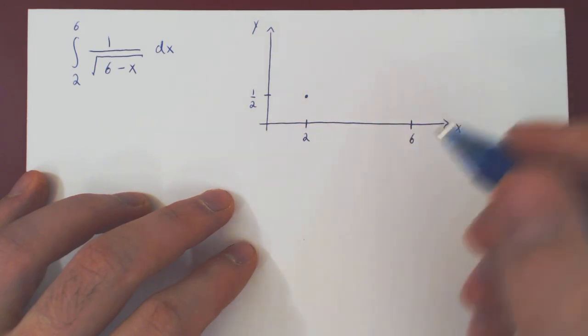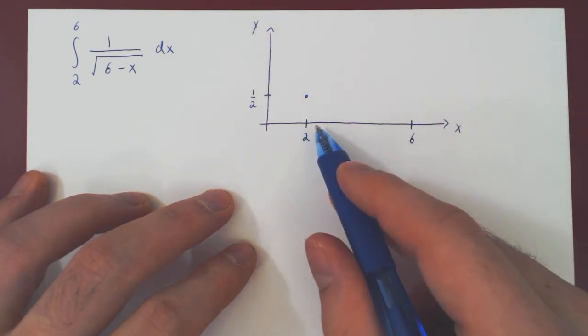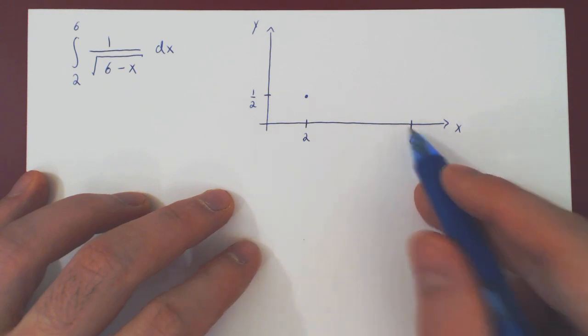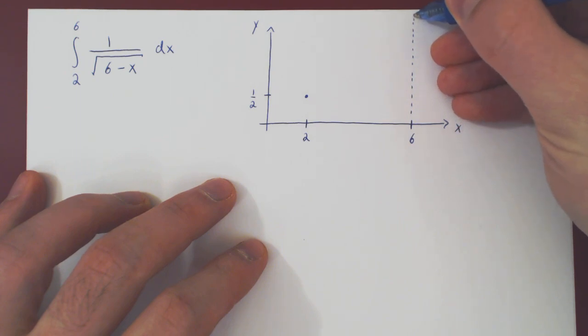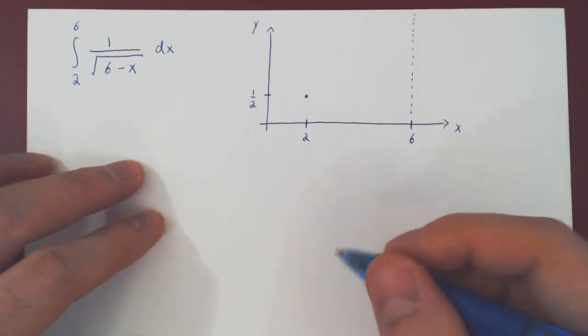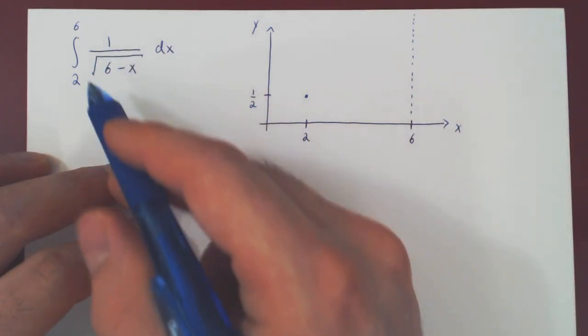Now the question is, what happens to our graph as x is increasing from 2 to 6? And as we have just said, we have a vertical asymptote at x equals 6. And it's a very simple function if you think about it.